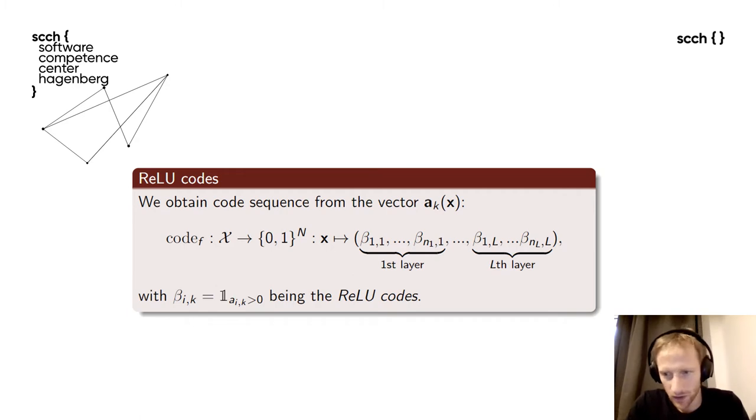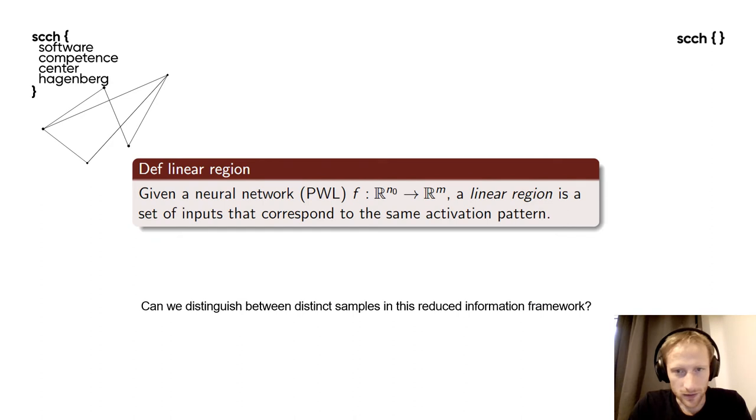Next, we will need a notion of ReLU codes. We obtain a code sequence from the vector of its activations by clipping the values of each neuron to either 0 or 1. We keep it equal to 0 if the value of that neuron is 0 and we keep it equal to 1 if it's strictly positive.